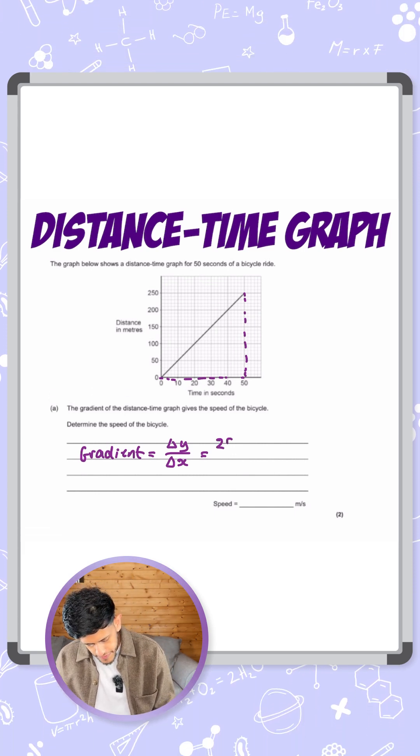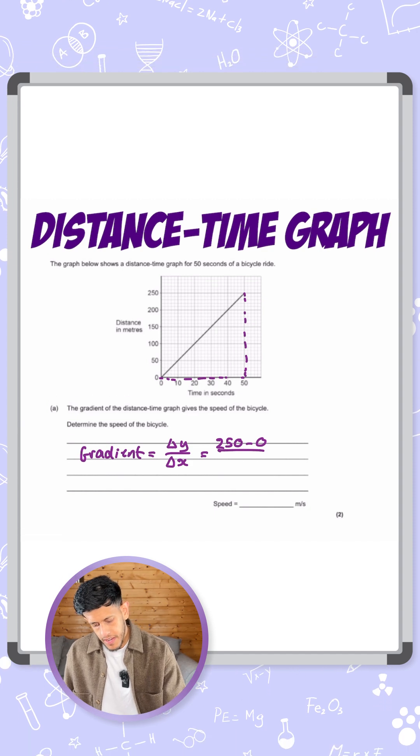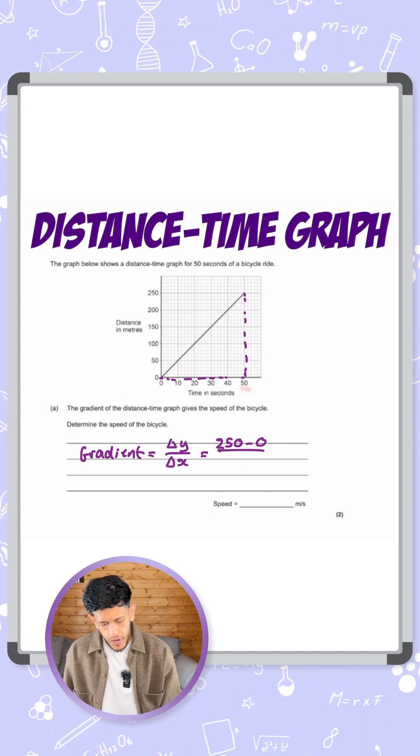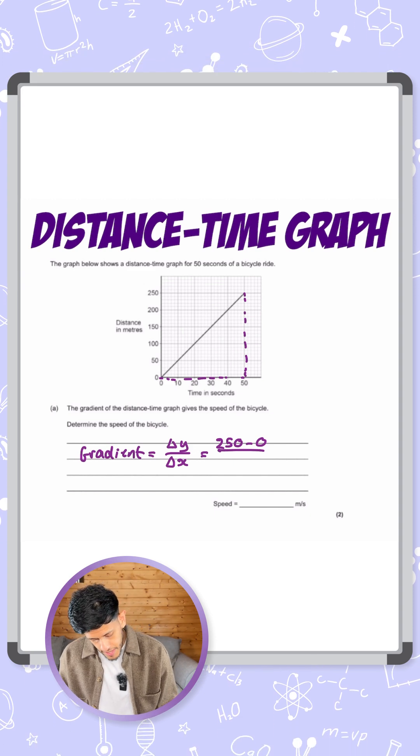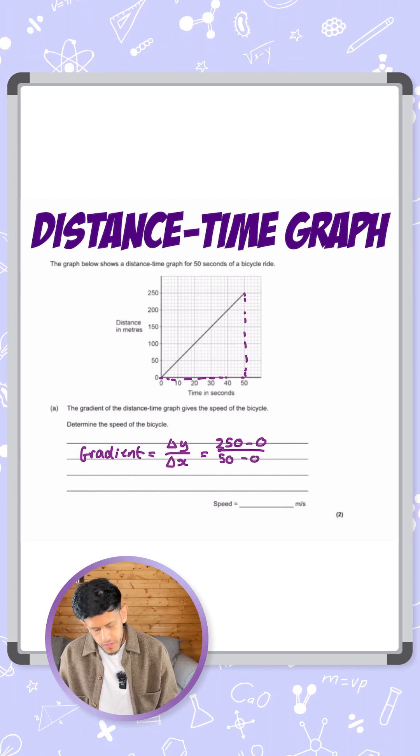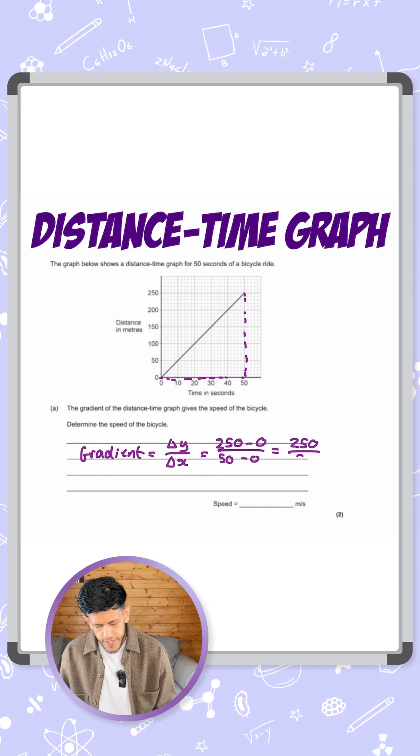So I'm going to put 250 minus zero at the top, and on the bottom we can see that the time goes from 50 to zero. So in the same way, we're going to do the change in time as 50 minus zero. So 250 minus zero equals 250, and 50 minus zero equals 50.